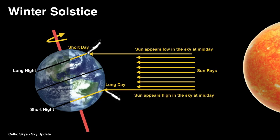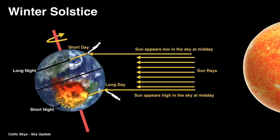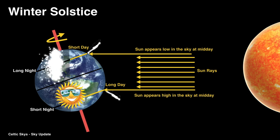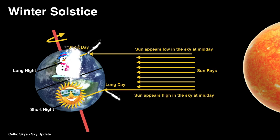Conversely, when the axis appears to be pointing away from the Sun, we have summer conditions in the Southern Hemisphere and winter conditions in the Northern Hemisphere.